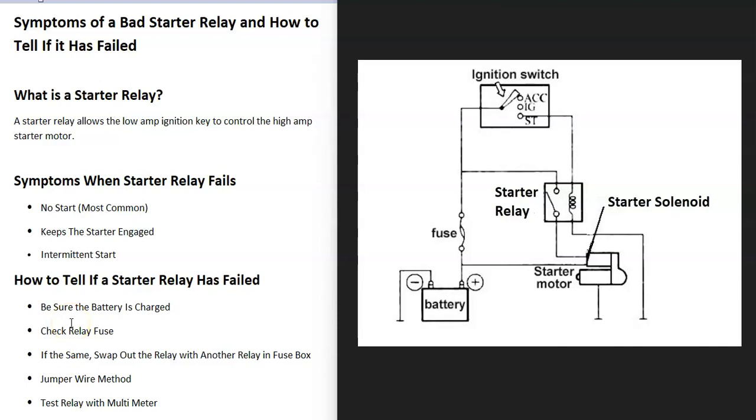A starter relay allows the ignition system, which has low amps, to control the high amps that the starter motor needs to turn the engine. The starter motor needs a lot of amps to crank the motor over, which requires very thick wire going to the battery. The ignition system uses much lower amps and much smaller gauge wire, so in order for the ignition system to control the starter, a starter relay is used.